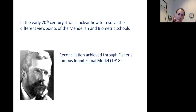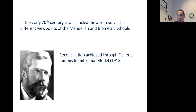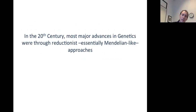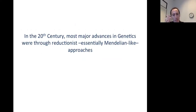To a large extent, reconciliation came through R.A. Fisher's 1918 paper on the infinitesimal model. The essential idea was that if you have a large number of loci that act in essentially a Mendelian switch-like manner, then for any individual, you can count up the number of on and off switches they have. If you assume that determines a phenotype, then that can produce a continuous distribution of phenotypes in the population.